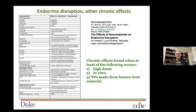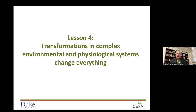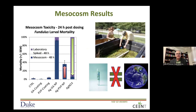A key lesson from nano that needs to be considered as we move into the realm of plastics is that transformations occur, particularly in complex systems where there are all sorts of different elements interacting — environmental or physiological systems. Those transformations can change everything. Just taking the case of nano-silver and comparing laboratory and mesocosm data, what one often observes in the lab is not what you observe in the field and vice versa.